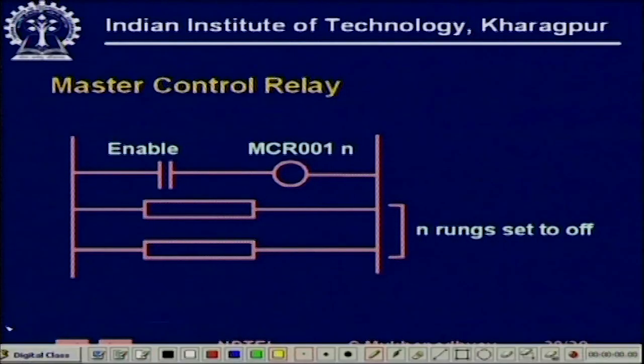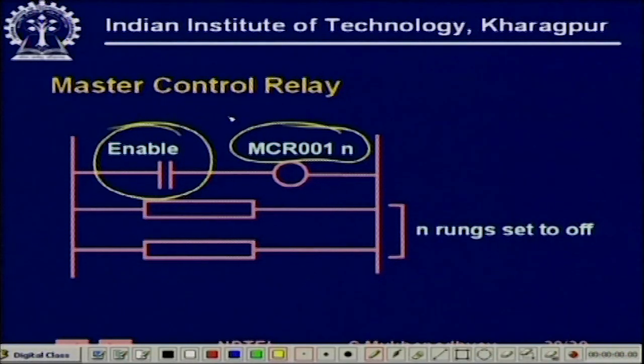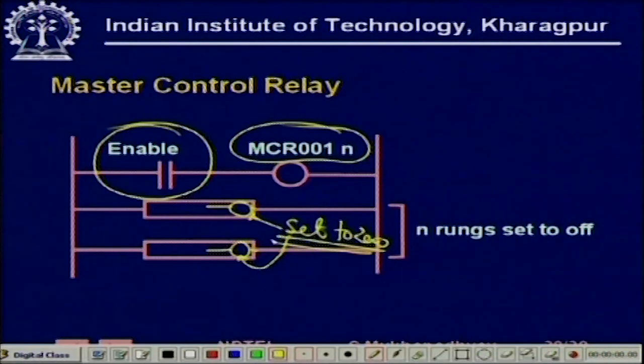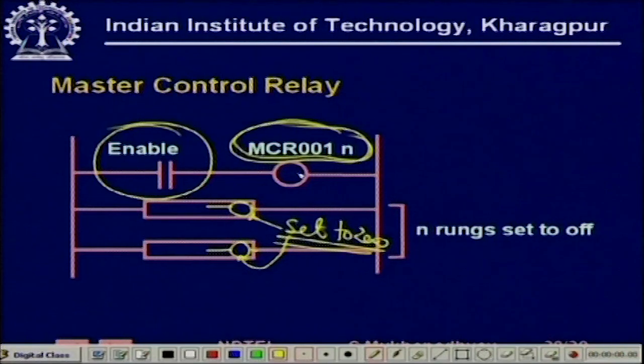Similarly, you can have the master control relay (MCR), which is also a program control statement. Whenever the enable logic is satisfied, this MCR output coil — a very special output coil — is excited, and the next n output coils will all be set to 0 without evaluating their logic. If MCR is not excited, the rungs are evaluated normally according to normal PLC logic evaluation.